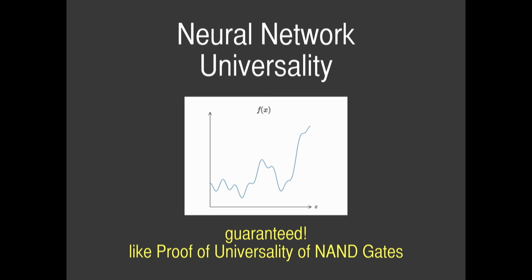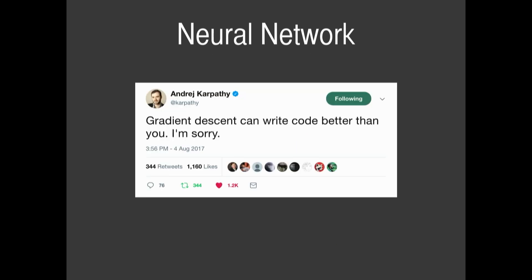And it's a good thing, because with neural networks there's a sort of universality — it can approximate any function, guaranteed, like the proof of universality for NAND gates. I really like this tweet: gradient descent, which is one of the optimizations for neural networks, can write better code than you. I'm sorry, and I think we're just going to have to deal more and more with this as programmers as we go along.